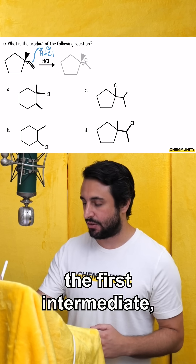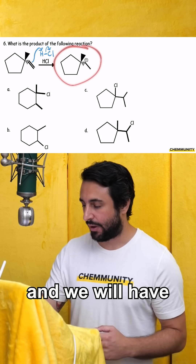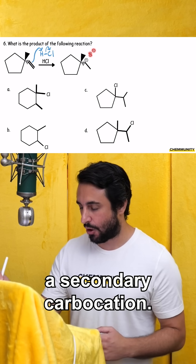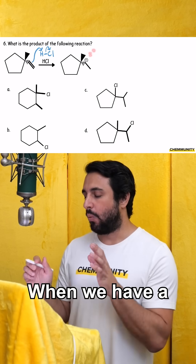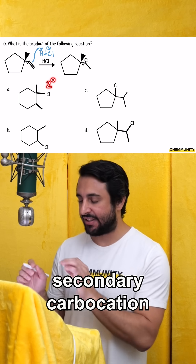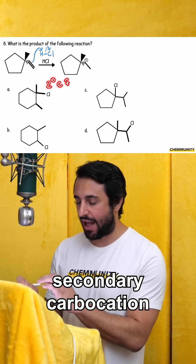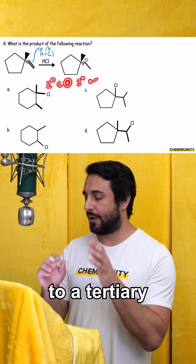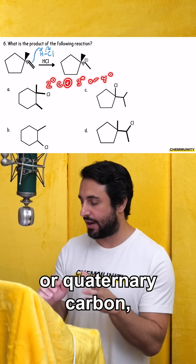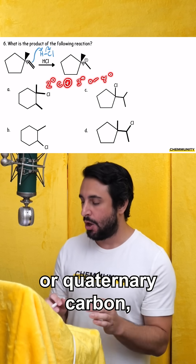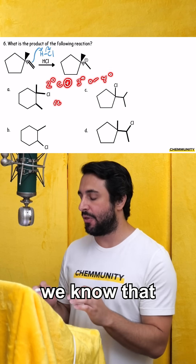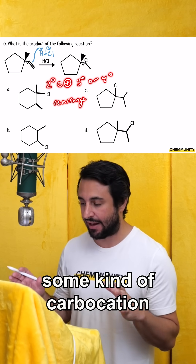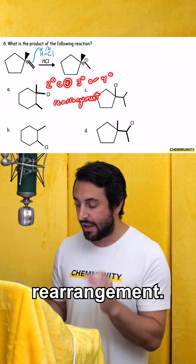Let's draw the first intermediate — we will have a secondary carbocation. When we have a secondary carbocation that is adjacent to a tertiary or quaternary carbon, we know that there's going to be some kind of carbocation rearrangement.